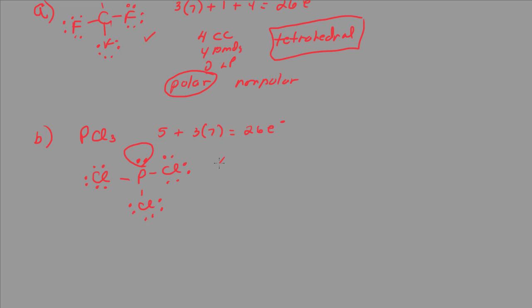Here we have four charge clouds around the phosphorus. We have the lone pair and then the three chlorines. We have three bonds and we have one lone pair, so we know that this corresponds to a trigonal pyramidal geometry.